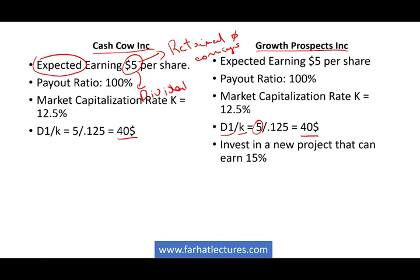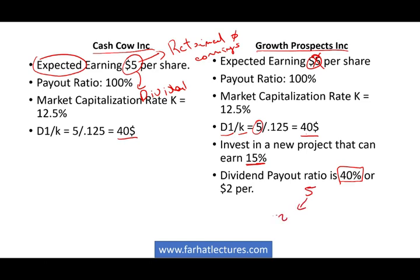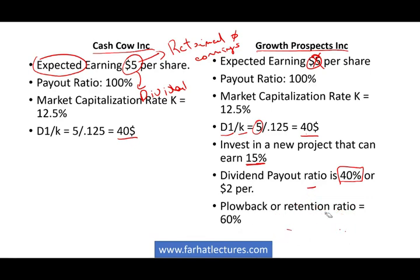Growth companies want to invest in a new project — maybe a new product or geographic expansion. They can earn 15% on this new project. The dividend payout ratio changes to 40%. So from the five dollars in earnings, they pay two dollars in dividends and keep three dollars. The retention ratio is three divided by five, which is 60%. The plowback ratio is also 60%, and 60% plus 40% equals 100%.